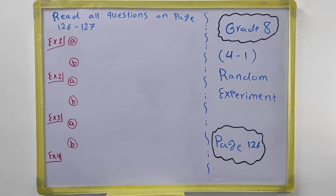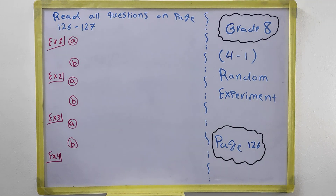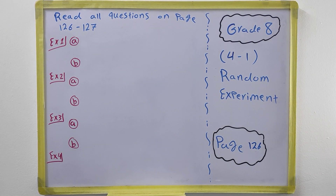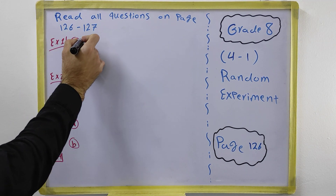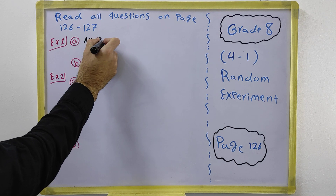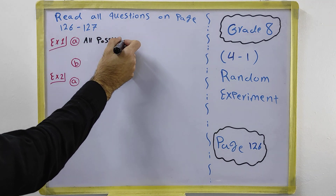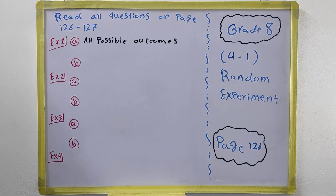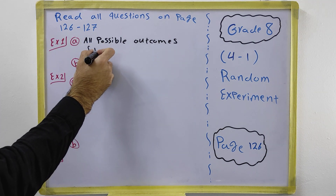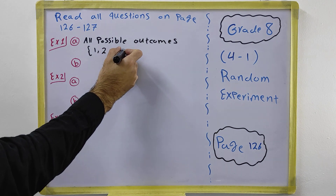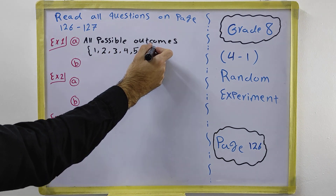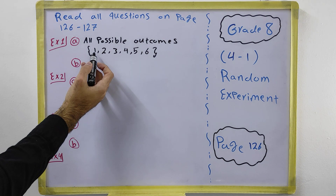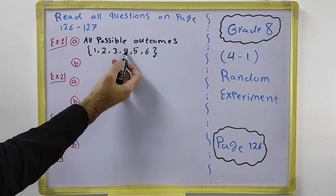In Example 1, the question says a player threw a number cube numbered from one to six. We know a number cube has faces one, two, three, four, five, six. Part A tells you to write the set of all possible outcomes on a number cube. When you throw a number cube, you will get one, or two, or three, or four, or five, or six — these are all possible outcomes.